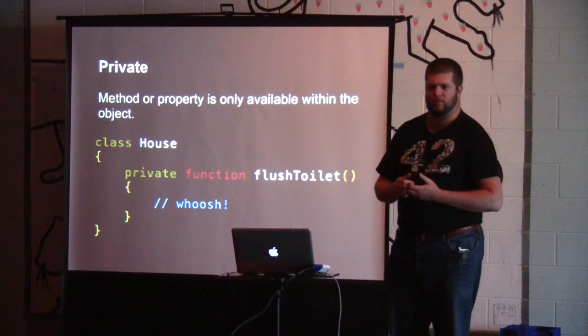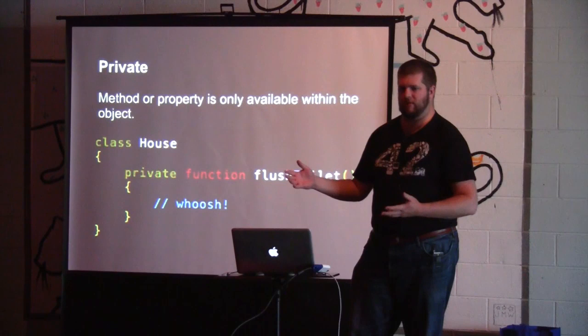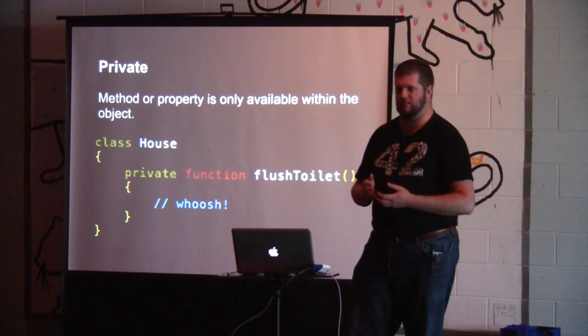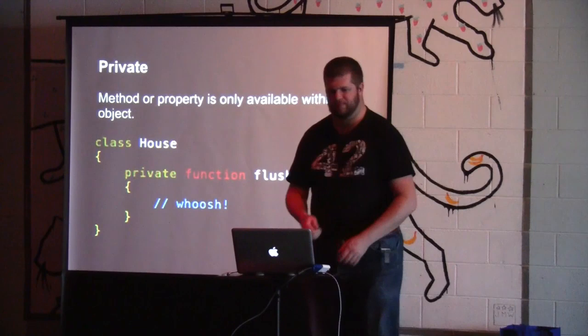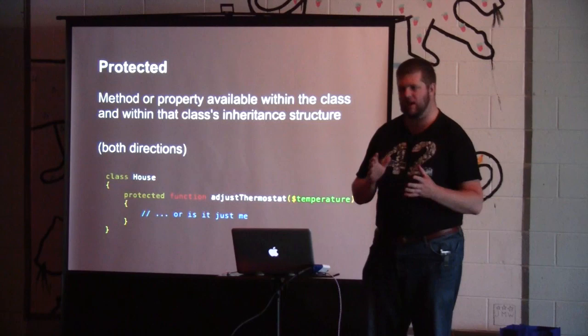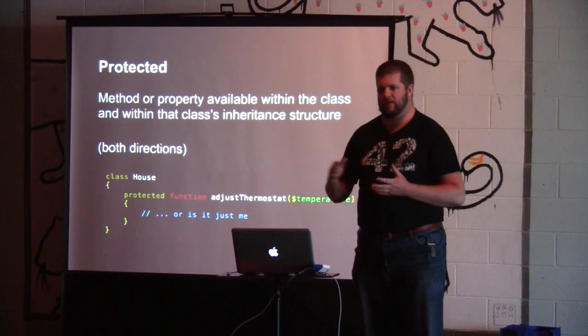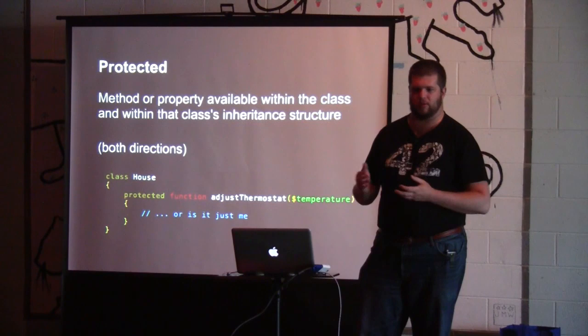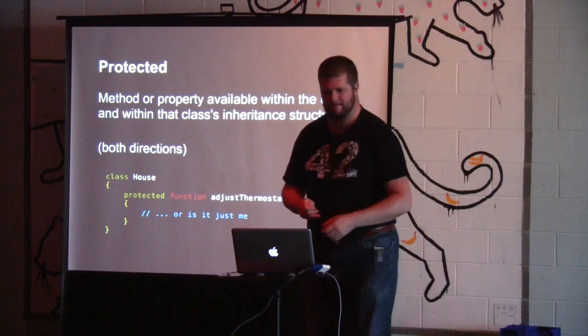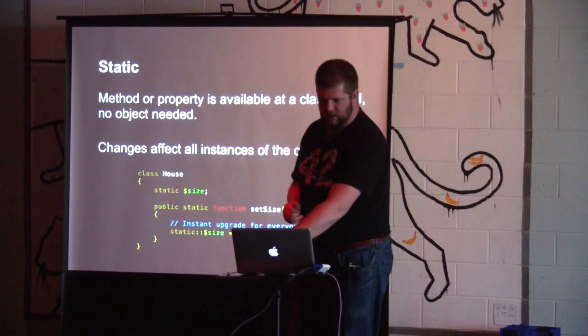Private is a method or property that is only available within that object. So if I've got my house, the only thing that can call flush toilet, for instance, is going to be something within that house. We've also got protected, which is kind of the crossover between private and public. It's available throughout the entire inheritance tree of an object — available to both the class's parents and the class's children.